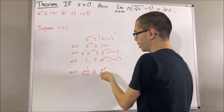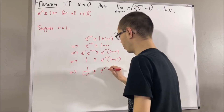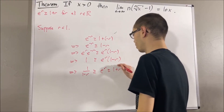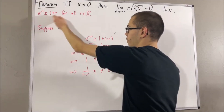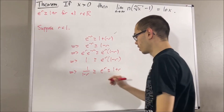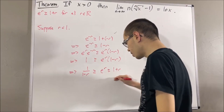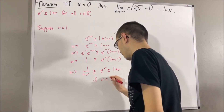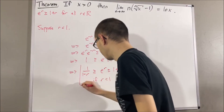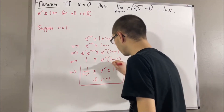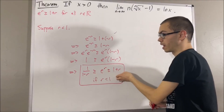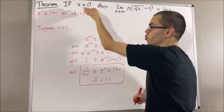So we have that this inequality is true if r is less than 1. We also know e to the r is greater than or equal to 1 plus r. So this two-sided inequality is true if r is less than 1, and we're going to use this fact to prove the theorem.